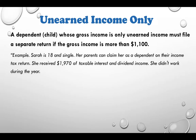Let's see an example. Say Sarah is 18 and single. Her parents can claim her as a dependent on their income tax return. She received $1,970 in taxable interest and dividend income. She didn't work during the year. So this $1,970 in interest and dividends is called unearned income — it's the only income she has because she didn't work and had no earned income.